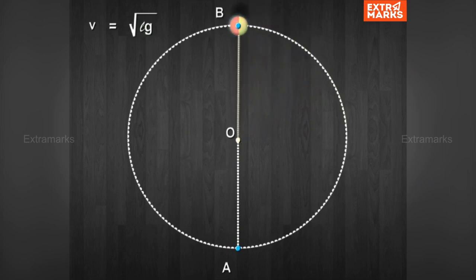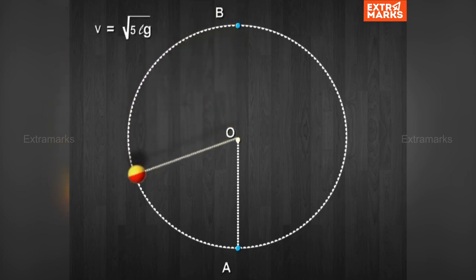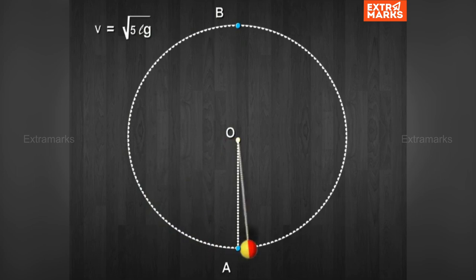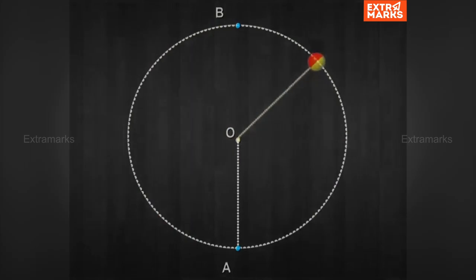For a given mass and radius, the velocity of the object at a point depends on the angular displacement. At point B, the velocity becomes minimum and tension becomes zero; therefore V_B equals √(Lg). Thus the minimum speed required to keep the object in motion in a vertical circle depends on the radius and equals √(Lg). Similarly, the velocity at point A is V_A equals √(5Lg). This is why the object falls down without completing the circle when moved with a speed less than this minimum speed.